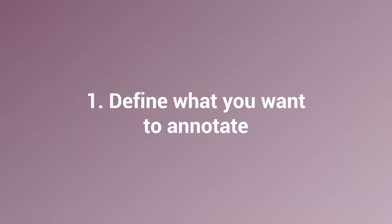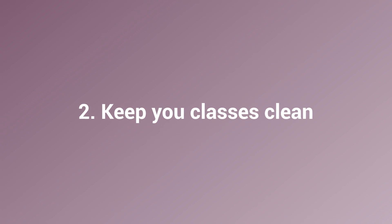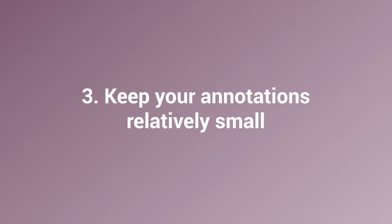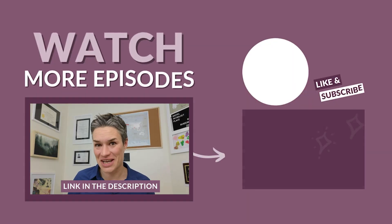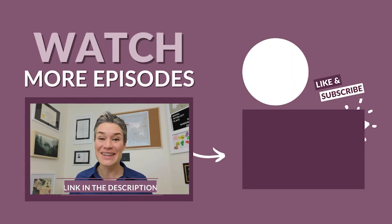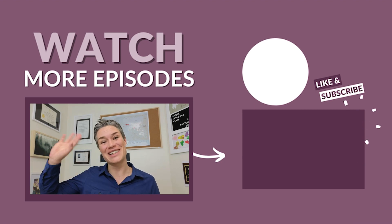So the four steps to have good annotations are: define what you want to annotate, keep your classes clean, keep your annotations relatively small, and correct your annotations to stay consistent. If you want to see a full demo of different annotation types beyond the semantic segmentation we just did, I'm linking to a webinar on annotation tips and tricks in the description below. Talk to you in the next episode.